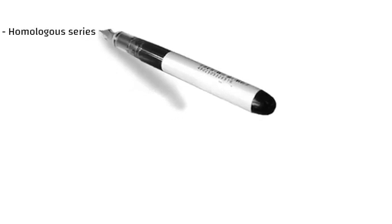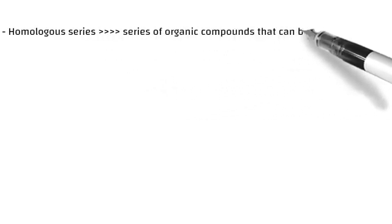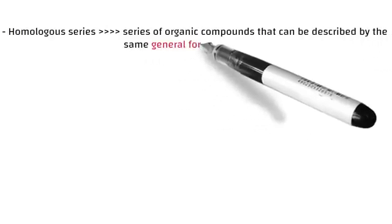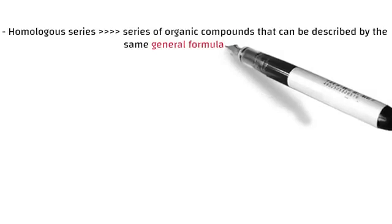The homologous series is a series of organic compounds that can be described by the same general formula. A functional group is a group of atoms that determines the physical and chemical properties of a group of organic compounds. Let me try and make a quick example to bring light to what I'm saying.